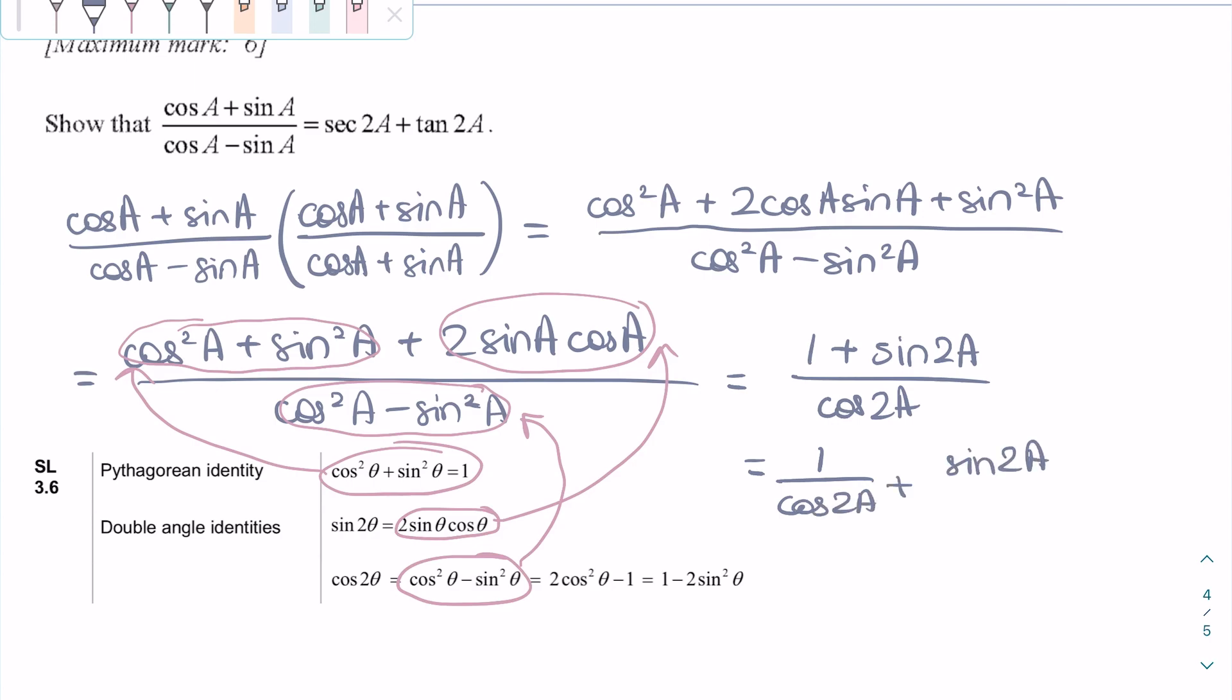And we know that 1 over cos 2a is the same thing as secant, so we can write secant 2a plus, and we know that sin over cos is tan, so we write tan 2a. And then we have proved the identity in the question.